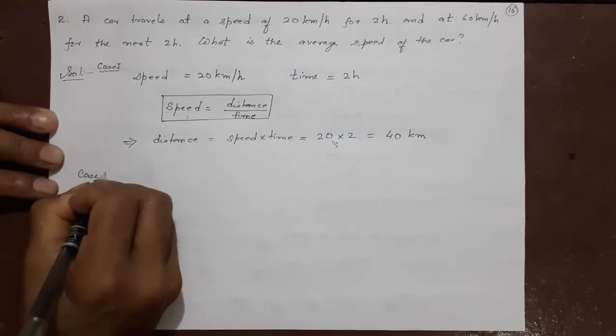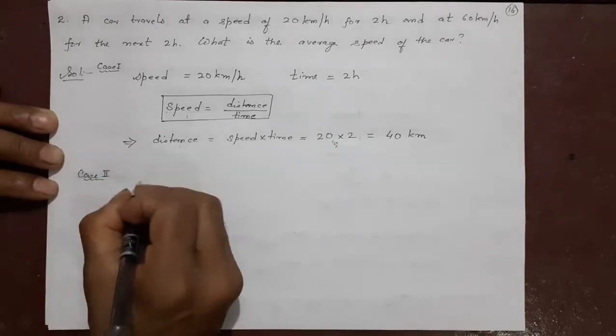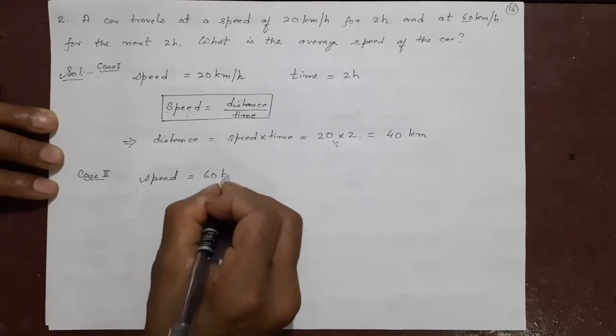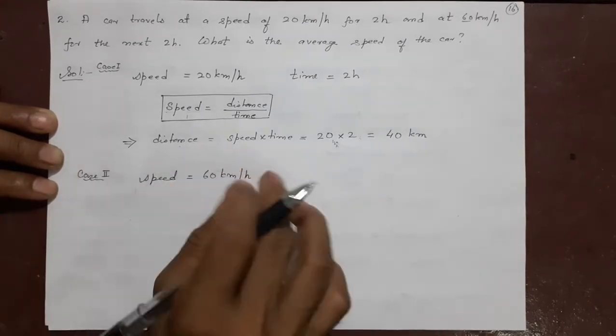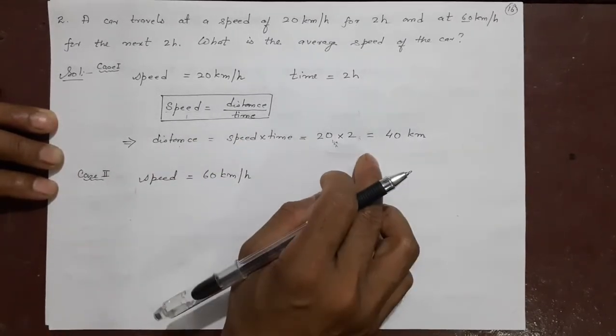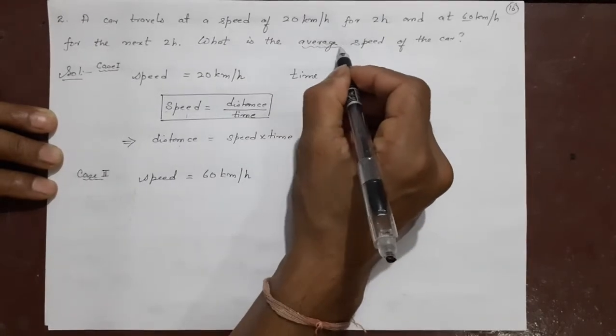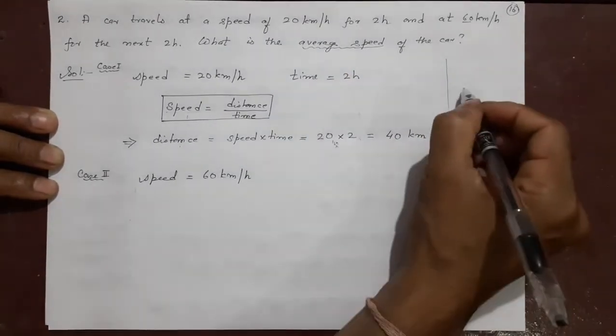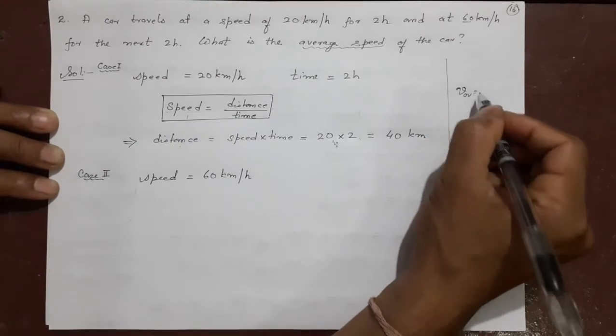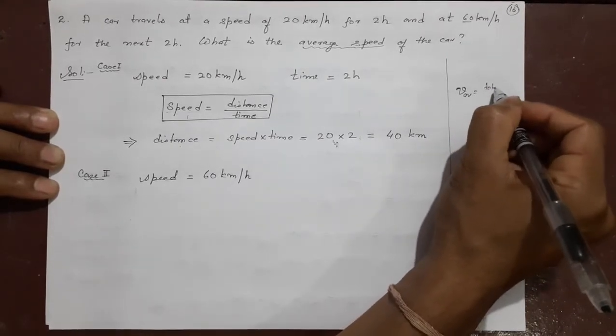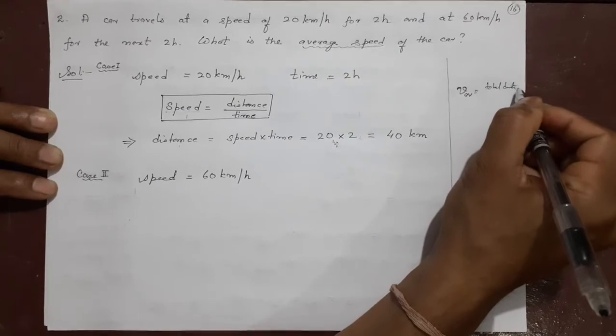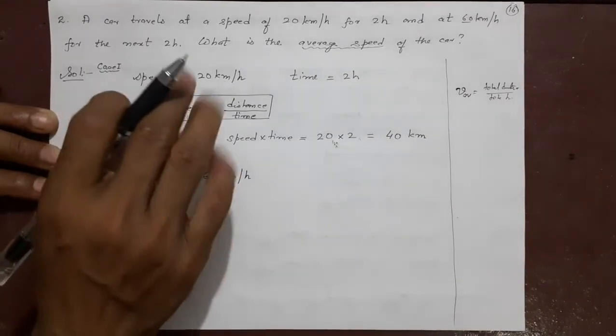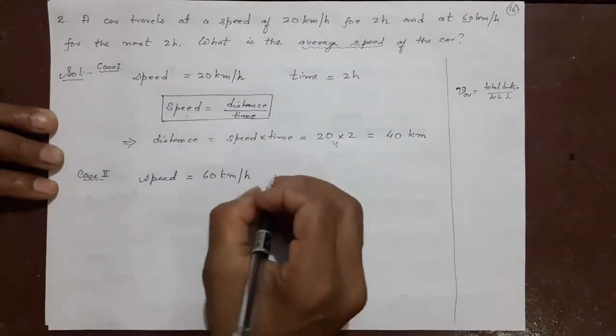Now case 2. Case 2 again, just like this. What is the speed? 60 kilometer per hour. Then after getting both the distance, we will find average speed. Because average speed requires what? Average speed formula, not velocity. Total distance divided by total time. So I am finding total distance. Distance in case 1 and distance in case 2 I will find.